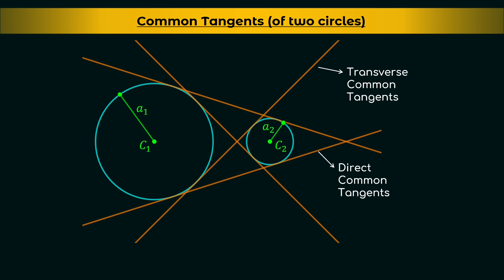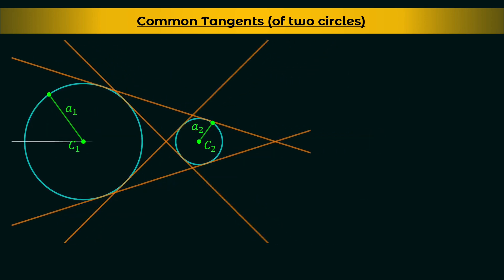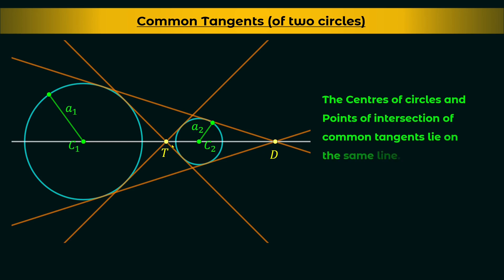Now there is one observation here. If you draw a line through the centers of both circles and consider the points of intersection of common tangents — D for the point of intersection of direct common tangents, and T for the point of intersection of transverse common tangents — both of these points lie on that same line. That is, the centers of the circles and the points of intersection of the common tangents are collinear.